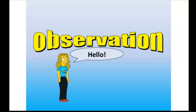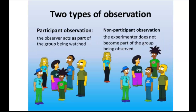In normal social sciences, observation is either participant observation or non-participant observation. The observer acting as part of the group they are watching is called participant observation. The non-participant observer stays on the outside and does not become part of the group being observed.